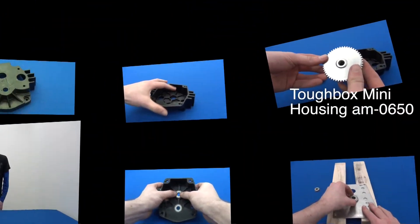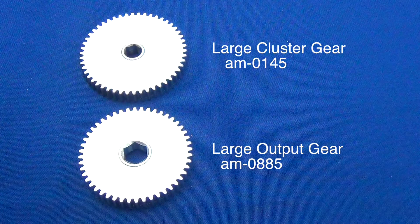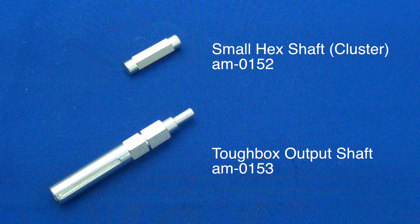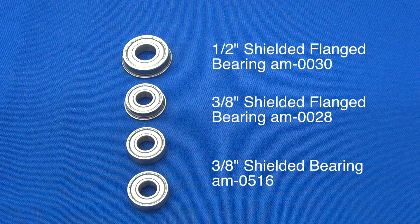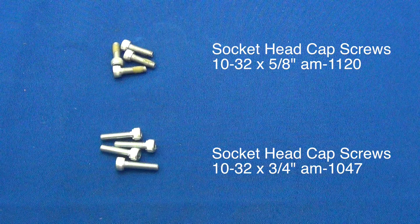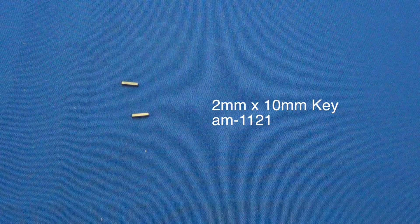In this video, we're going to walk you through assembling a Toughbox Mini AM2236, which is the gearbox included in your 2013 kit of parts. Now that you're familiar with all the parts in the kit, let's build a gearbox.